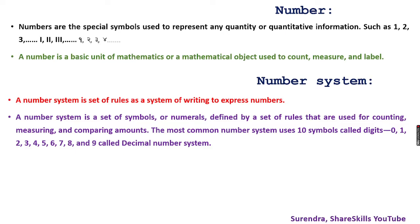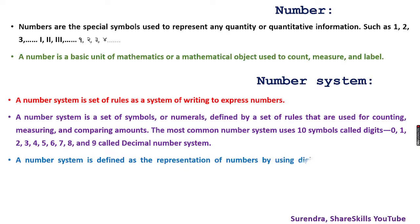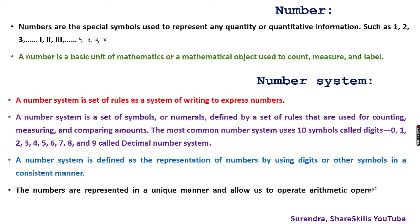Number system is the set of symbols or rules that define numerals, used for counting, measuring, and comparing amounts or quantitative information. The most common number system uses base 10 — that is decimal — with digits 0, 1, 2, 3, 4, 5, 6, 7, 8, 9. Number system is defined as the representation of numbers by using digits or other symbols in a consistent manner, with predefined rules.